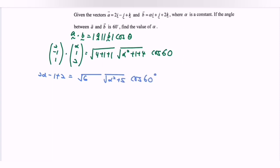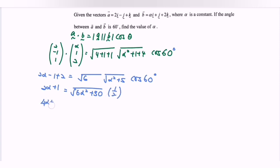Since cos 60° equals 1/2, we get 2 alpha + 1 equals √6 · √(alpha² + 5) · (1/2), which simplifies to 4 alpha + 2 equals √(6 alpha² + 30).